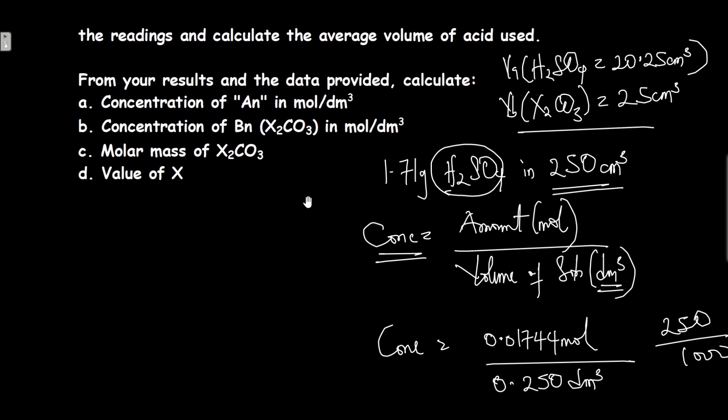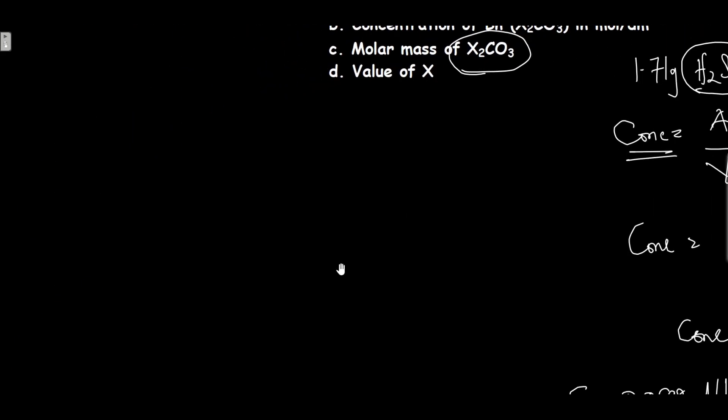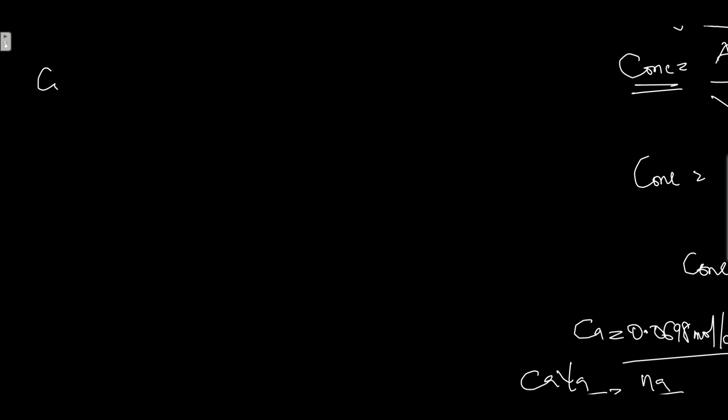Next one says calculate the molar mass of this unknown compound. You do this by saying concentration in grams per dm³ equals the concentration in mol/dm³ times the molar mass. From the question,